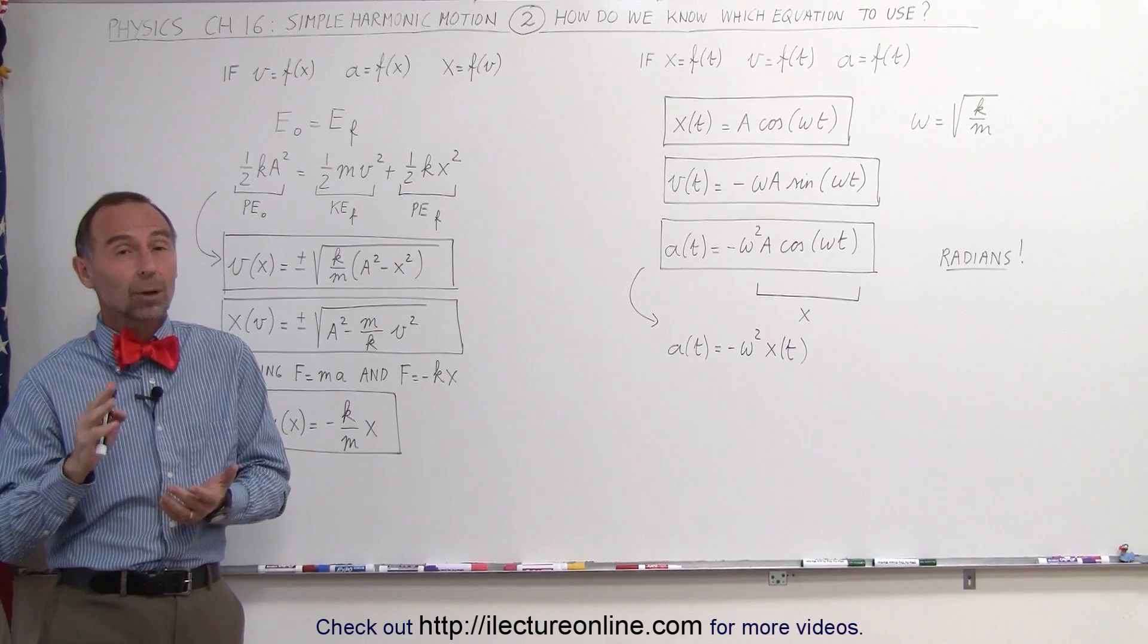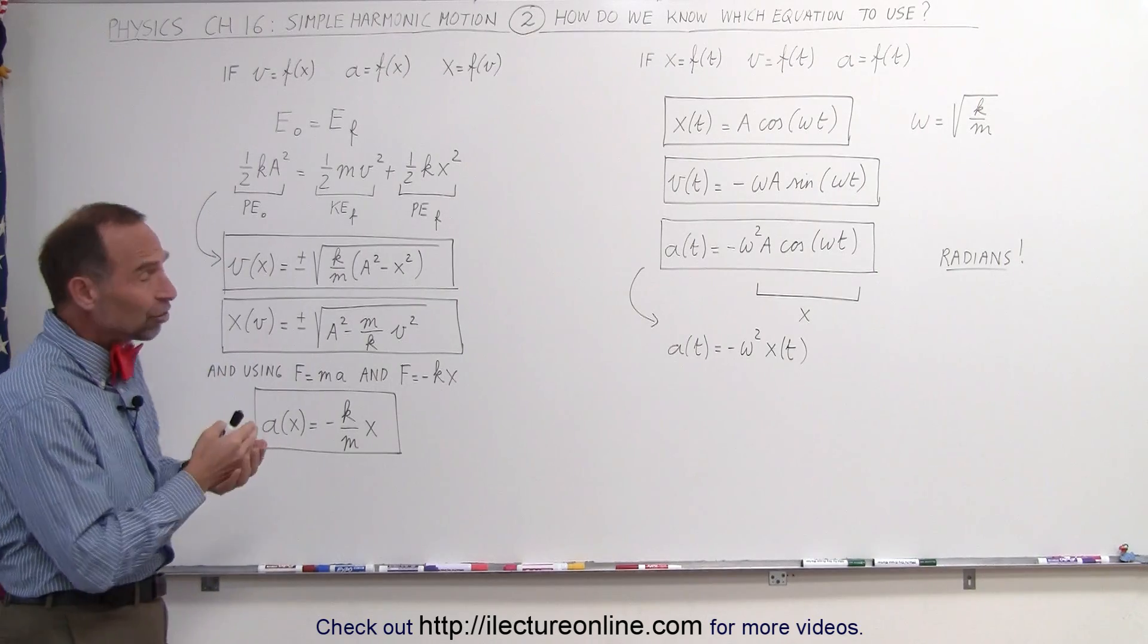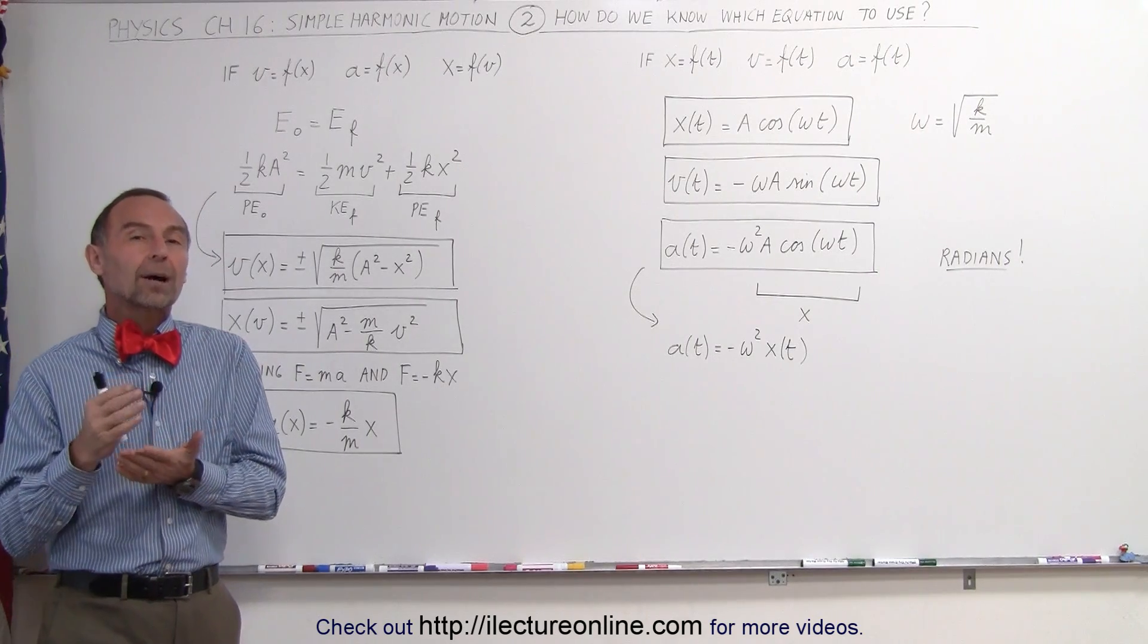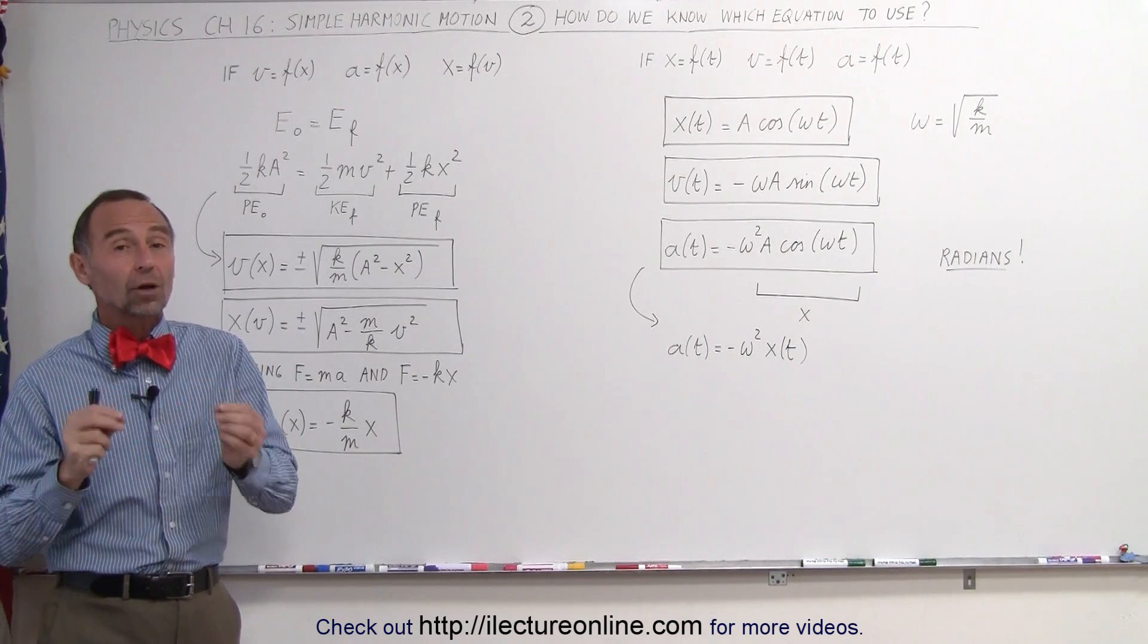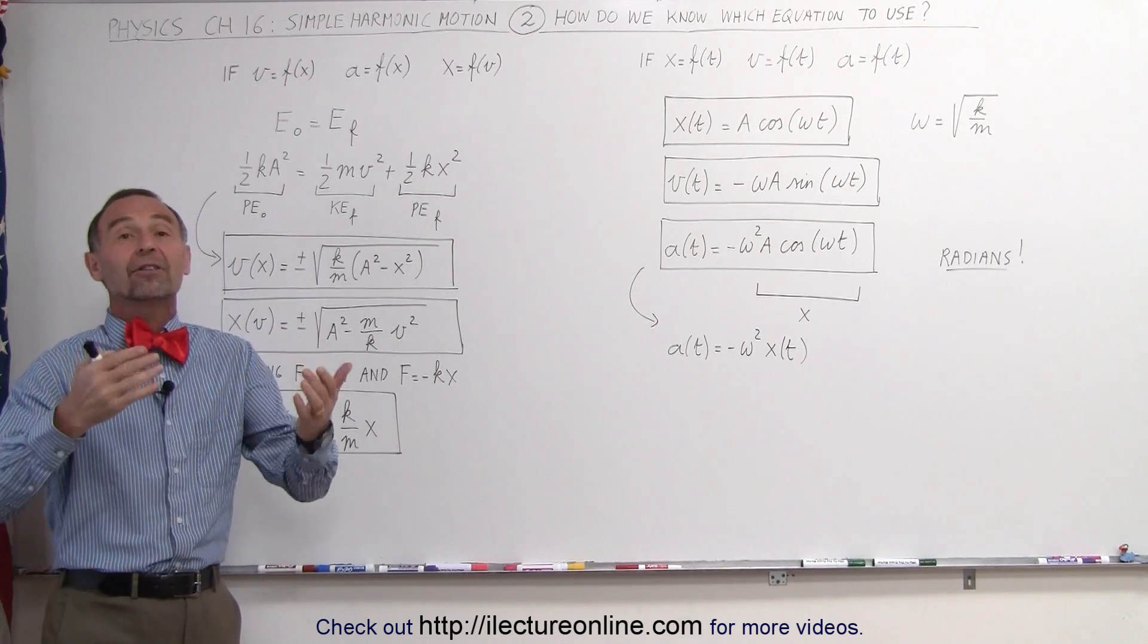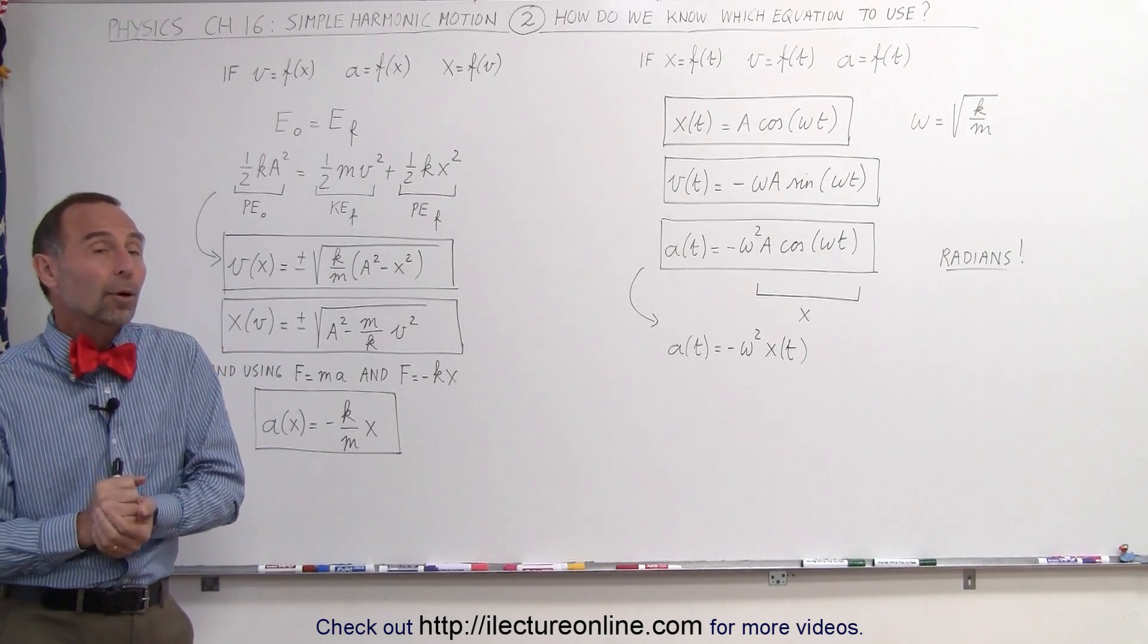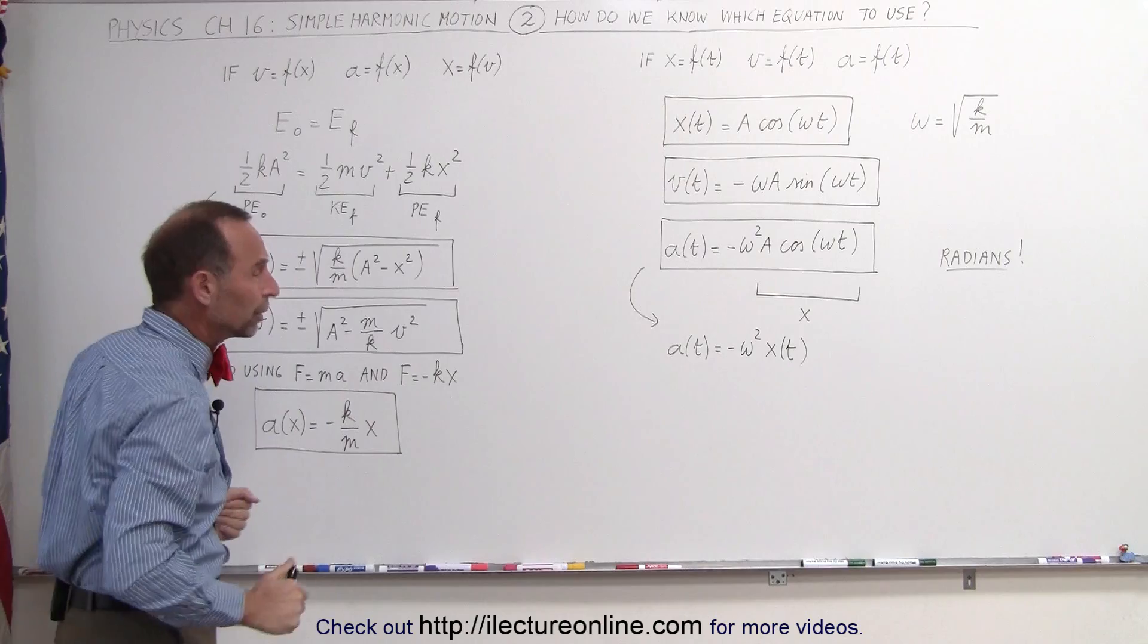Well, that depends upon one thing. Do we know anything about the object in terms of position, or do we know something about the object in terms of time, and that makes all the difference in the world. If, for example, they ask you, find the velocity when the object is 3 centimeters away from the equilibrium point, then you want to use the equations on the left side of the board.